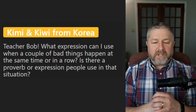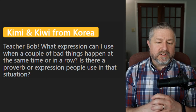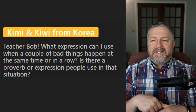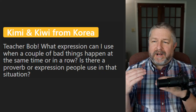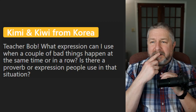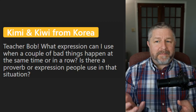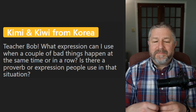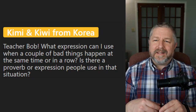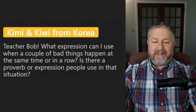Kimmy and Kiwi ask: 'What expression can I use when a couple of bad things happen at the same time or in a row?' Sometimes when one bad thing happens, people say they're 'waiting for the other shoe to drop.' And sometimes people think bad things happen in threes — when two bad things happen, they think, 'Oh, I hope another bad thing doesn't happen.' Waiting for the other shoe to drop is pretty common. Certainly, when bad things happen, it's not nice when they all happen in a row.